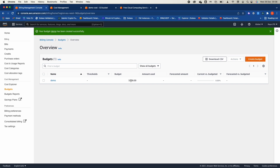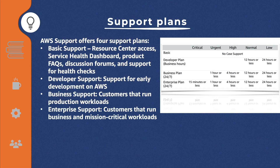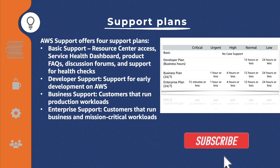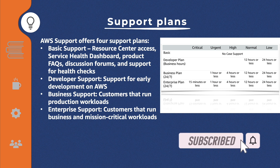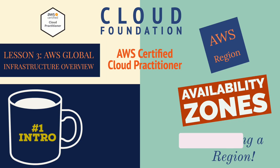There are four support plans to understand for the exam: Basic support, which every user gets when they join the AWS management console; Developer support; Business support, which comes with its own technical support team; and Enterprise support, which is for running mission-critical workloads. That covers module three. Let us now move to lesson three: the AWS global infrastructure.